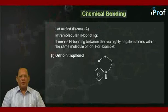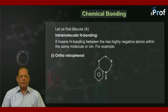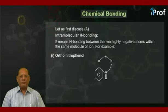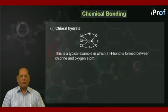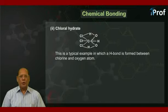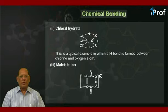Let us first discuss intramolecular hydrogen bonding. It means hydrogen bonding between the two highly electronegative atoms within the same molecule or ion. For example, the first example is ortho-nitrophenol, whose structure is shown here. The second example is chloral hydrate, whose structure is given here. The third is the maleate ion, which is the anion of malic acid, and its structure is given here.